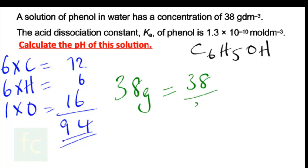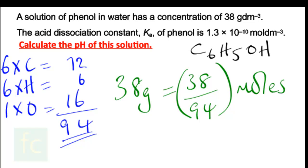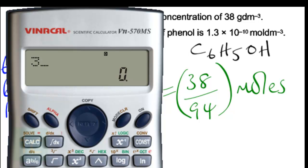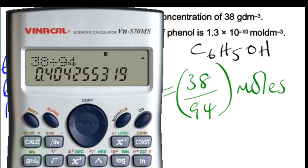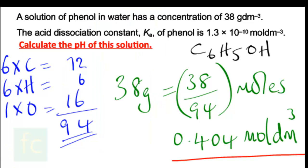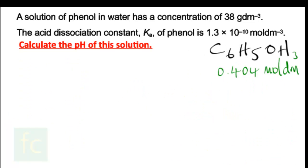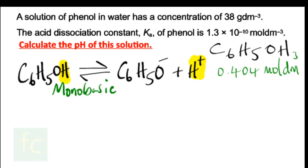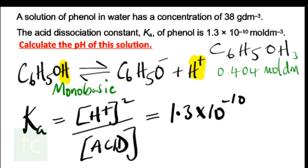The question involves 38 grams in a cubic decimeter. Dividing the mass by the relative molecular mass of 94 gives us 0.404 mol dm⁻³ — the concentration of phenol. So in addition to Ka = 1.3×10⁻¹⁰, we now have the concentration of the acid at 0.404. The Ka expression for this monobasic acid is the concentration of H⁺ squared over the concentration of acid, and since it's a weak acid, the equilibrium concentration of acid is taken as the initial concentration of 0.404.